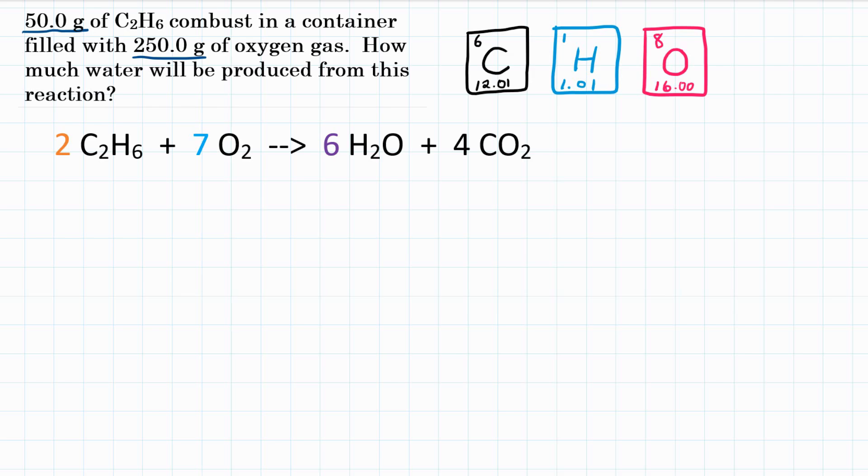So we have 50.0 grams of C2H6 and 250.0 grams of oxygen, O2. We're going to do three-step stoichiometry problems because we are going mass to mass for each of these. So we will draw three fractions, each of those in parentheses.